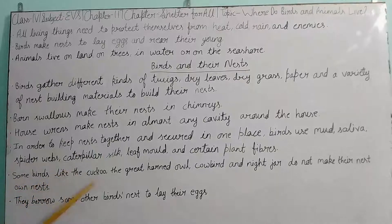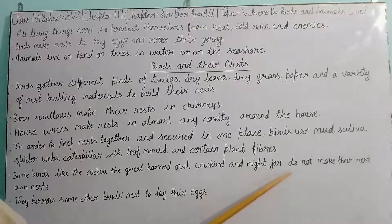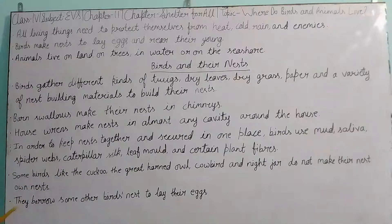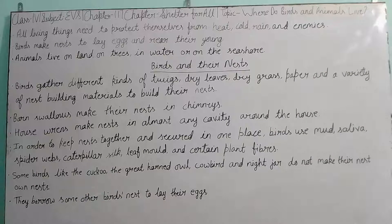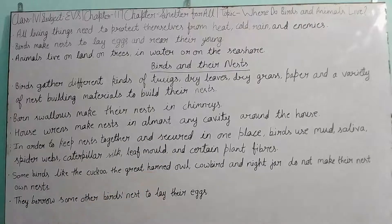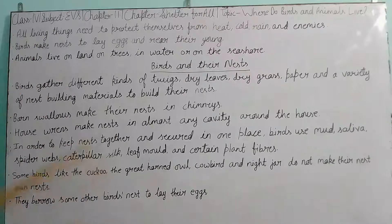Some birds, like the cuckoo, the great horned owl, and the nightjar, do not make their own nests. They borrow other birds' nests to lay their eggs. These birds find another bird's nest and lay their eggs there rather than building their own.